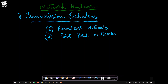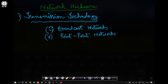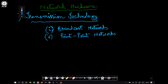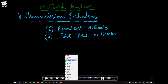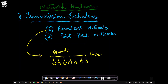There are two types of transmission technology: one is called broadcast networks and the other is called point-to-point networks. In the case of a broadcast network, there is one cable to which all the computers or communicating entities are connected. This cable is called the broadcast medium, and this is one type of network design — broadcast networks.